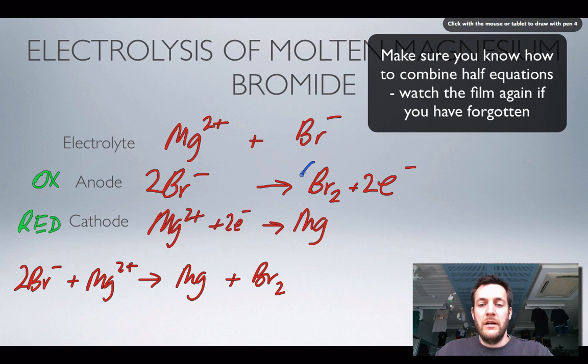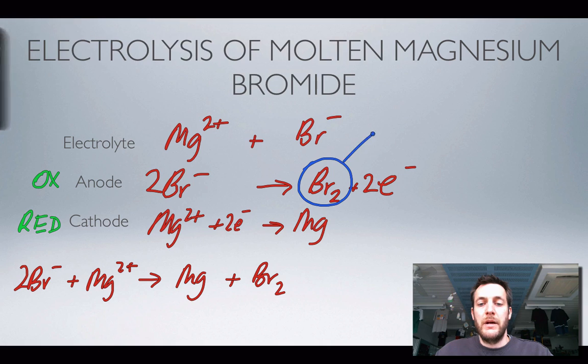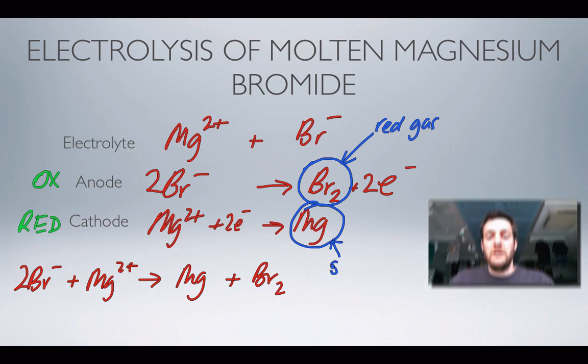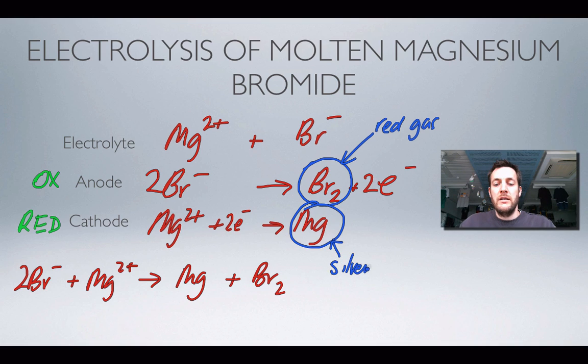Now what observations would I make? Well, bromine gas is a red gas, so I'd expect to see bubbles of a red gas appearing. What am I going to see for the magnesium? Well this, like most metals, is a silvery substance, and it's going to be molten because of the high temperatures inside the electrolytic cell.